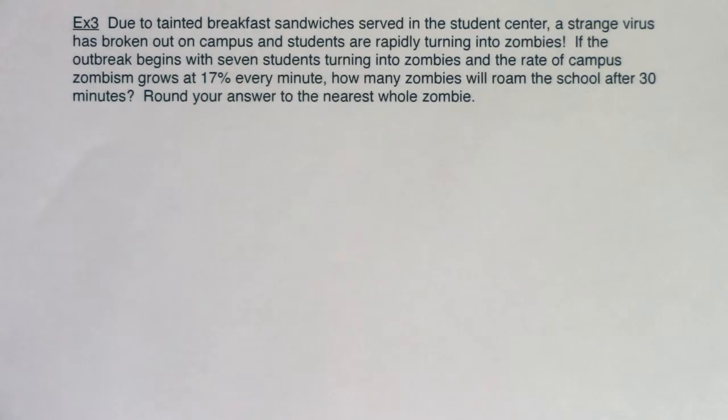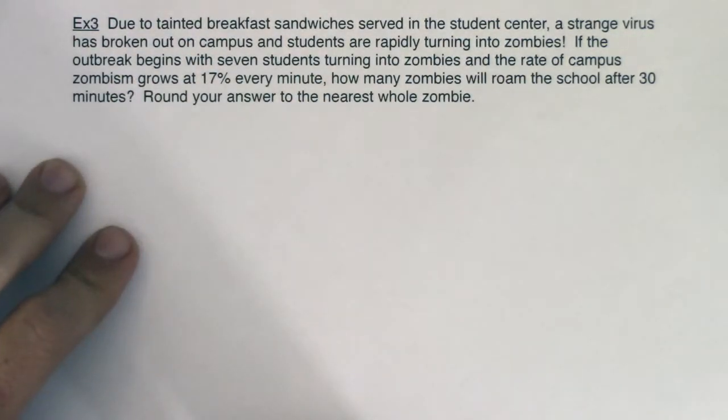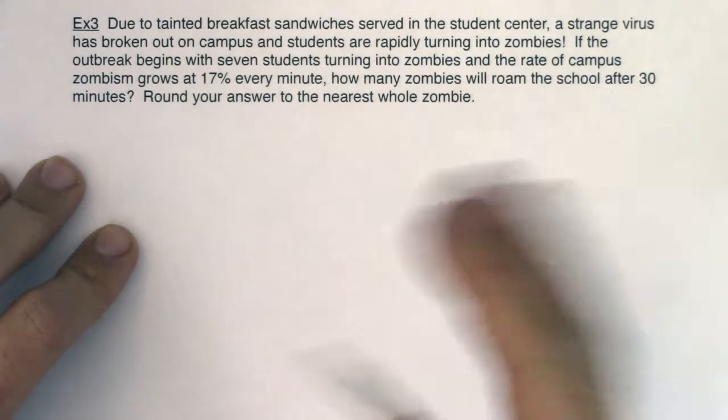Hey Math 31, welcome to example 3. Now in example 3 I'm going to work this problem in two ways. I want to show you how we can work this using a sub 0 e to the kt and then I also want to contrast that with the way we did it back in section 6.1 so that you can see that both of them are working.